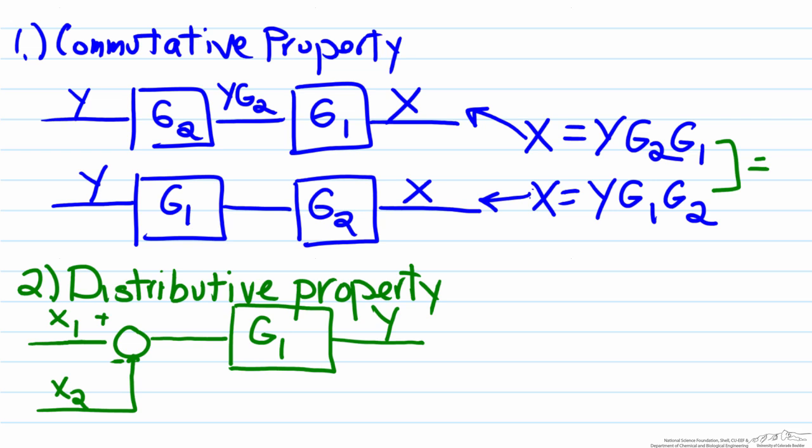you'll hit the summing point which shows we have a positive x1 minus x2. With the distributive property, g1 will be distributed to both x1 and x2, which means this becomes g1x1 minus g1x2. Since this outlet of g1 represents the output variable y, we know that these two relationships, y and g1x1 minus g1x2, are equivalent.